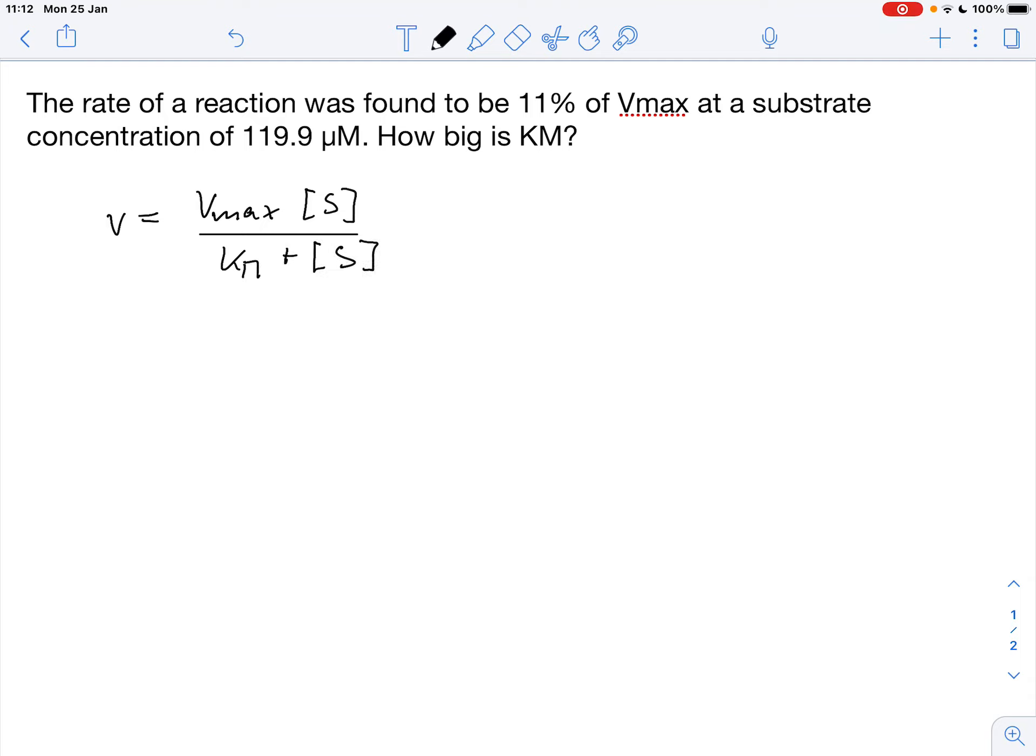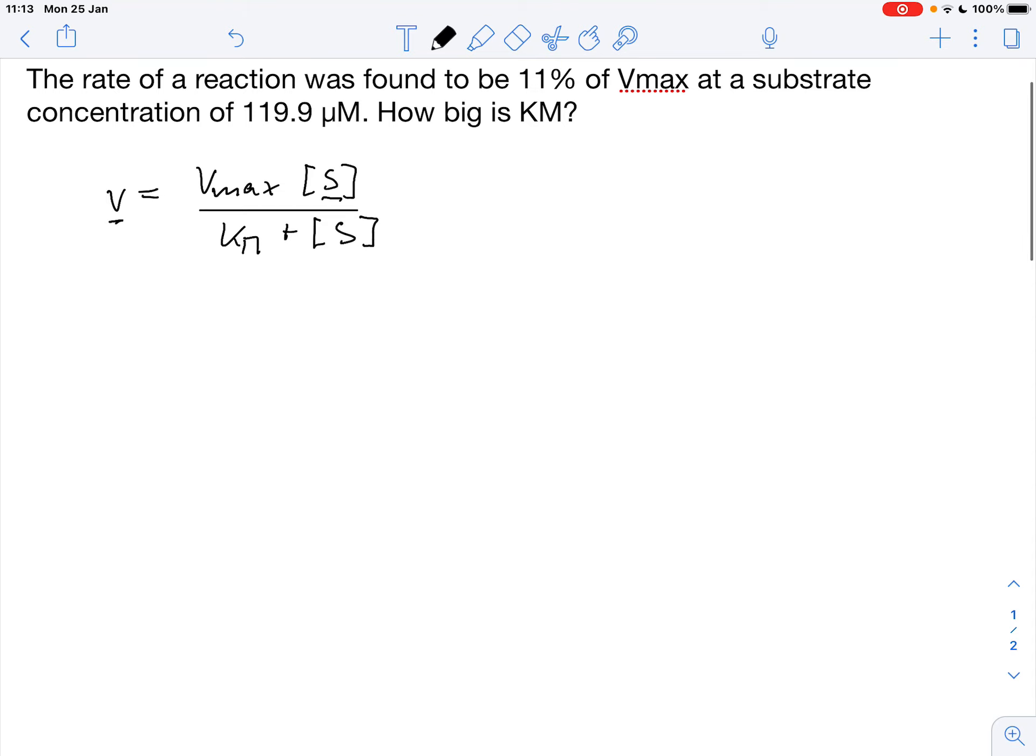And we know the substrate concentration here. We know that V, the rate, is a fraction of Vmax. So we can write this as 11%, that's our rate. So we can write this as 0.11, that's 11% of Vmax equals Vmax times S divided by Km plus S.